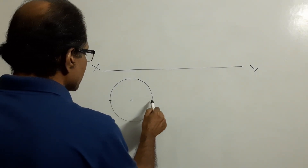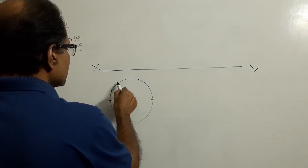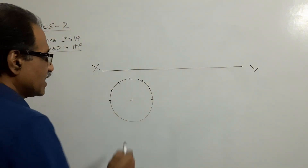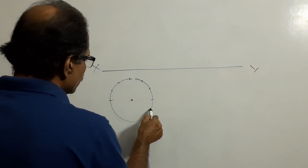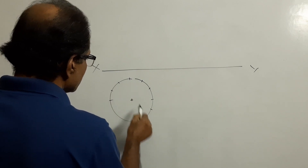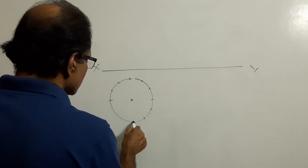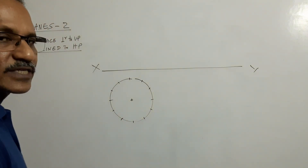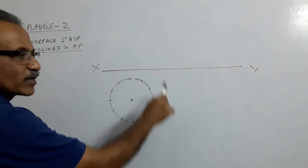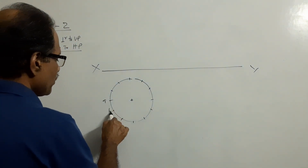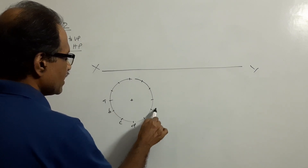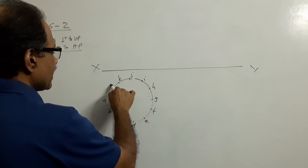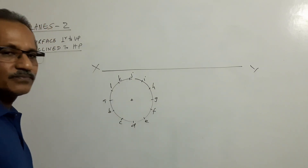Always divide the circle into 12 equal parts. How do you divide? Keep your protractor at the center: 30 degrees, 60 degrees, 90 degrees, 120 degrees, 150 degrees. Then keep your scale and draw radial lines. You get 12 divisions on the circle. Label them: A, B, C, D, E, F, G, H, I, J, K, L — 12 parts.